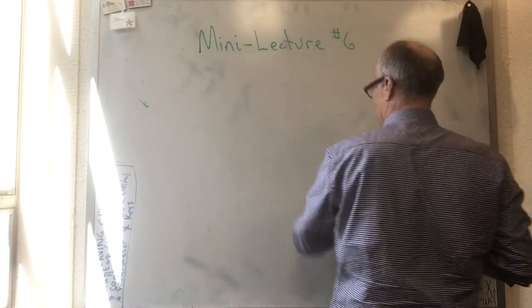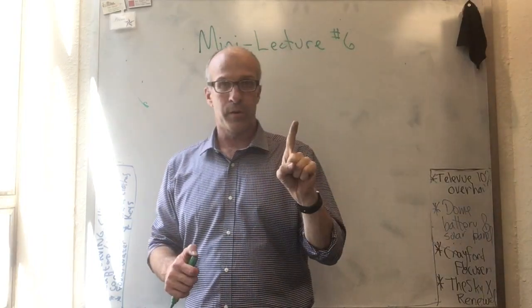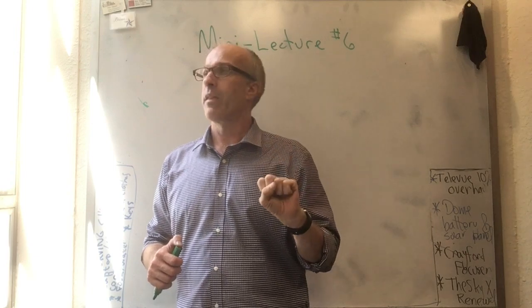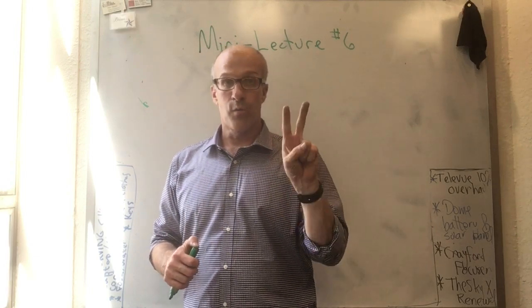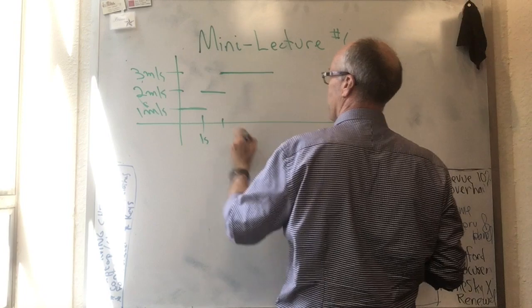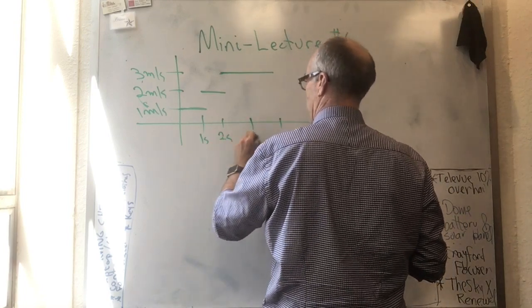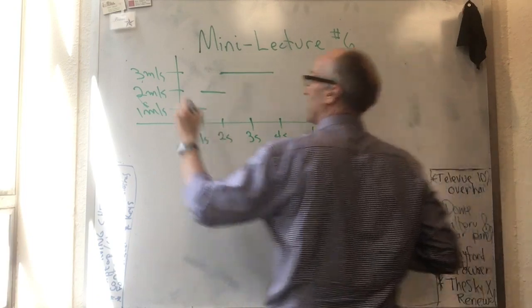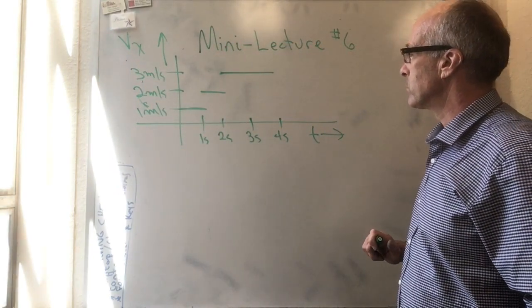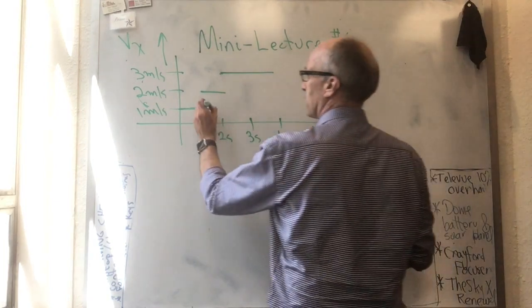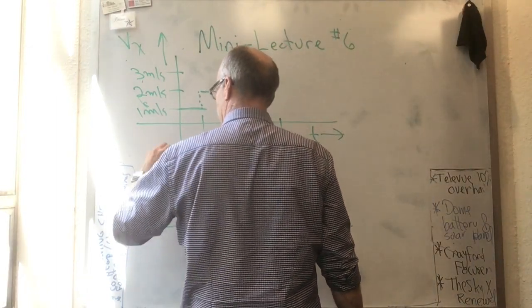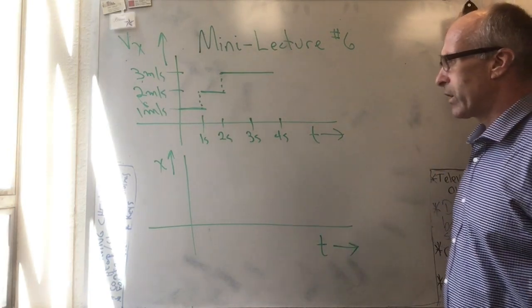So in my example, a particle is going to go one meter per second for one second, then it's going to go two meters per second for the next second, and then it's going to go three meters per second for two more seconds. This is time, and I'll call it v sub x. Now can you go from something like this, and these are discontinuities here, to a graph of x as a function of t.